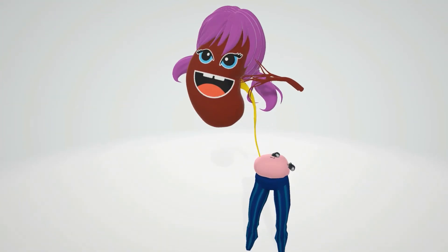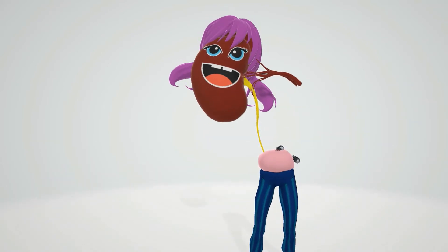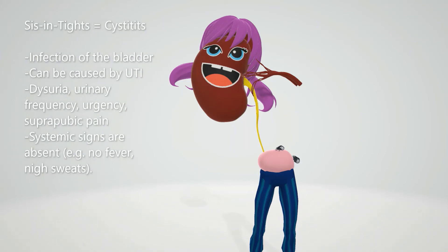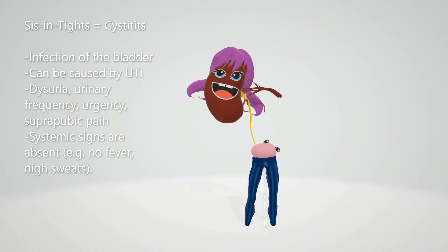This is the sister of the first person we met, and she wears tights — sister with tights for cystitis. Cystitis is an infection of the bladder caused by a urinary tract infection. Here we have the bladder on fire to help us remember that. It presents as dysuria, urinary frequency, urgency, and suprapubic pain. Systemic signs are usually absent — you're not going to see things such as fever and night sweats — and that's important for diagnosis.